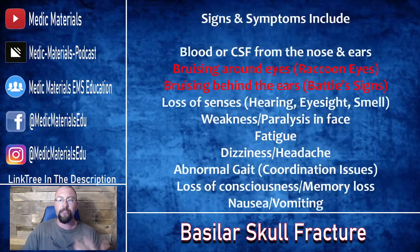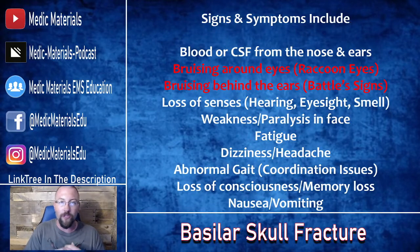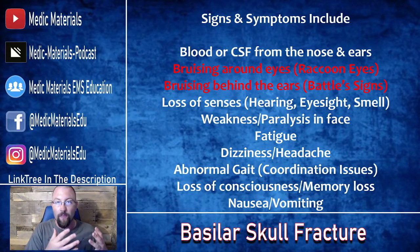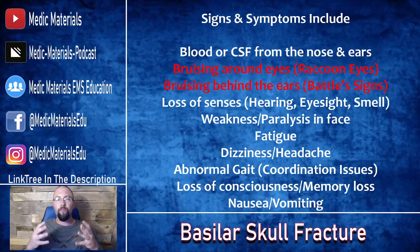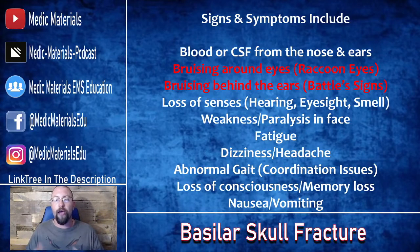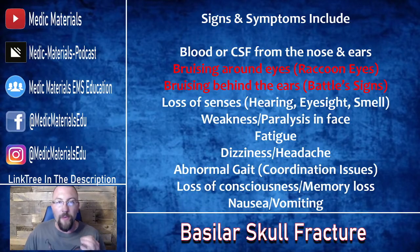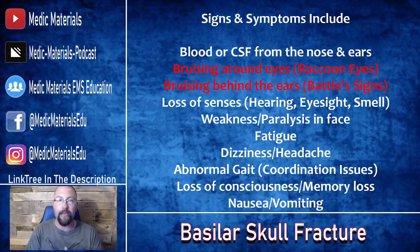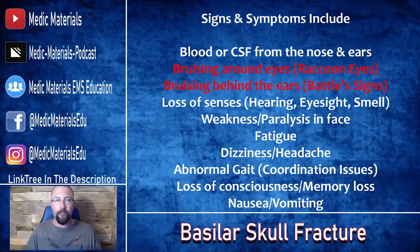In terms of signs and symptoms, we want to look for blood and/or cerebrospinal fluid (CSF) from the nose and the ears — either red liquid or a clear yellowish liquid coming from both ears, one ear, or the nostrils. Now the two big ones we always learn with basilar skull fractures: bruising around the eyes, which is raccoon eyes, and bruising behind the ears, which is battle signs.